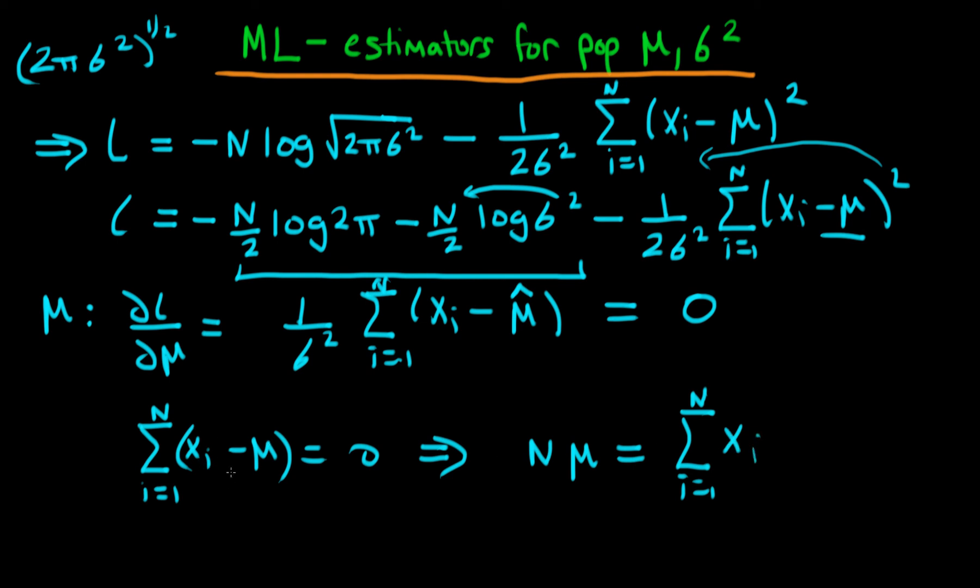And note that we've got n times mu because of the fact that we're summing over essentially a constant n time. So it's just summing 1 n times which gives us n. So we're going to have n times mu and that should be mu hat rather is equal to xi. In other words our maximum likelihood estimator for the population parameter mu is just 1 over n times the sum of i equals 1 to n of xi. In other words the sample mean.